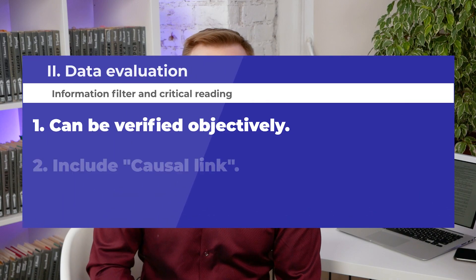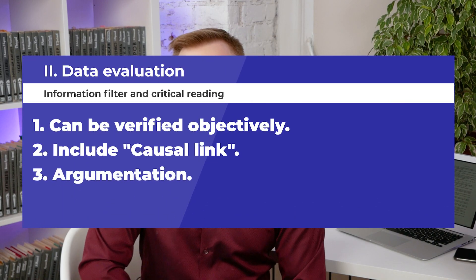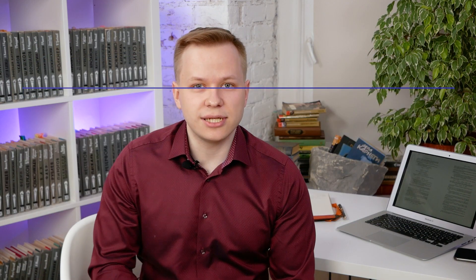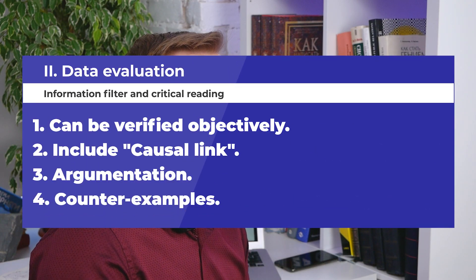We discussed the terms source material and causal link in the previous video — links are in the description. The third point is argumentation: what arguments does the author propose? Argumentation is one of the major attributes of knowledge. If a thesis has no arguments, it's just an opinion. The final point is whether you can find a simple counter-example. Sometimes it's easy to find a simple counter-example to the author's statement.